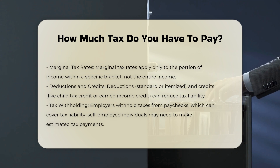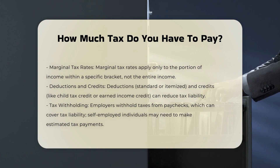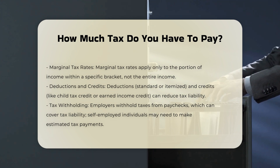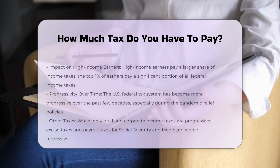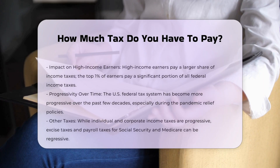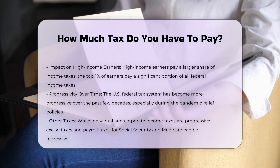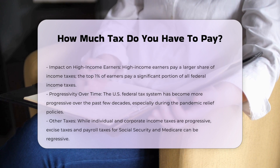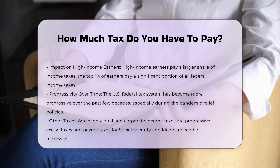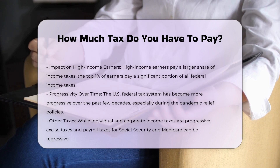Marginal tax rates apply only to the portion of your income that falls within a specific bracket. For instance, if you are a single filer with a taxable income of $50,000, you would pay 10% on the first $11,600, 12% on the next $33,725, and 22% on the remaining $4,175.